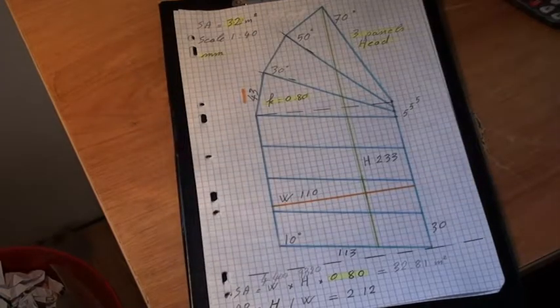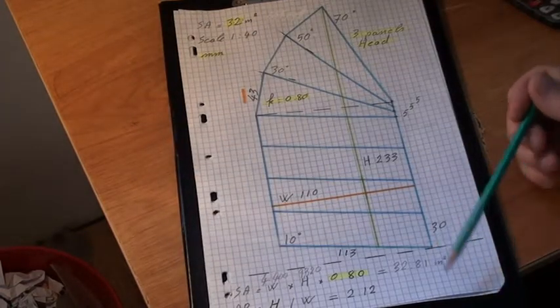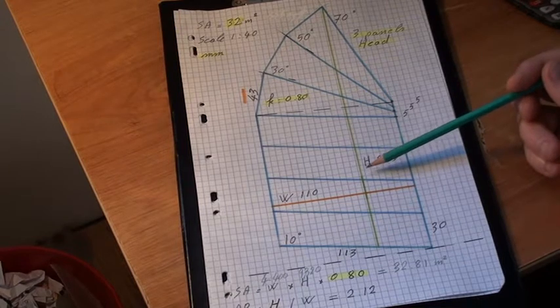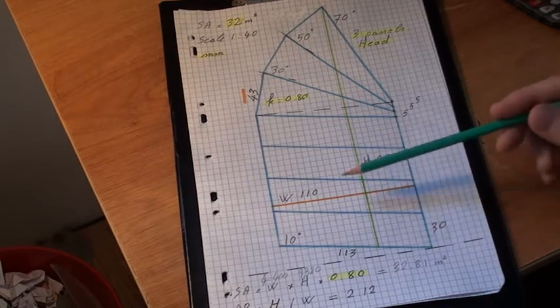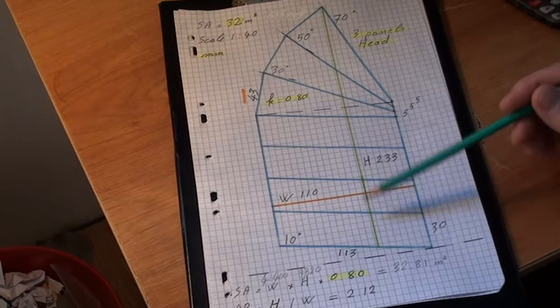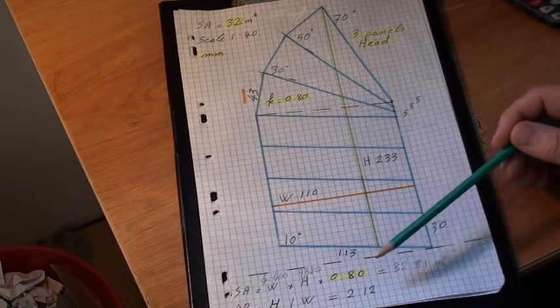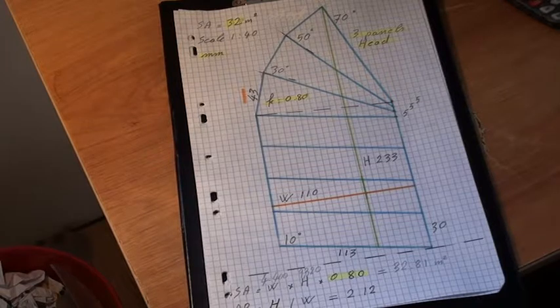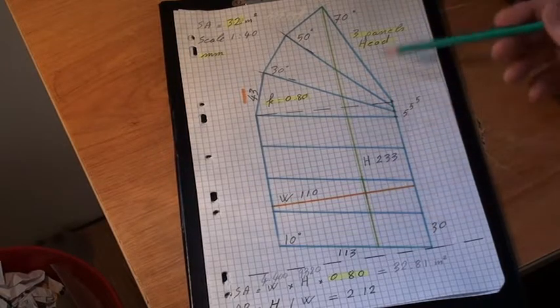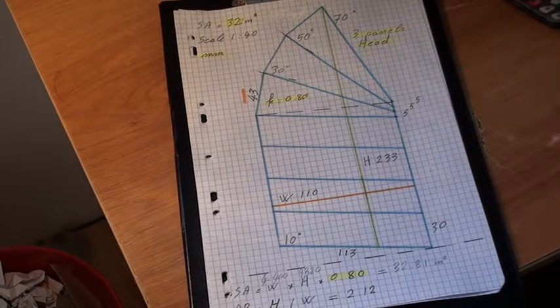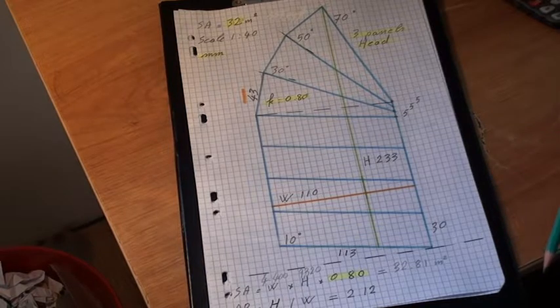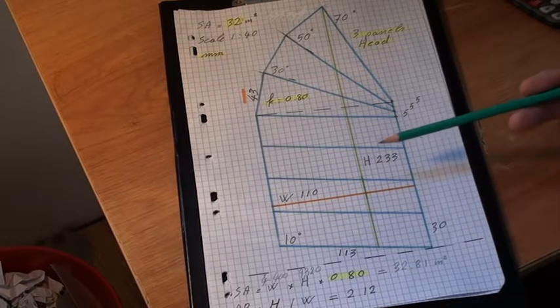But in practice we work out the area in multiplying the width by the height of the sail by the coefficient we saw in part 2, 0.8. And for this type of sail, we have the sail area right away.